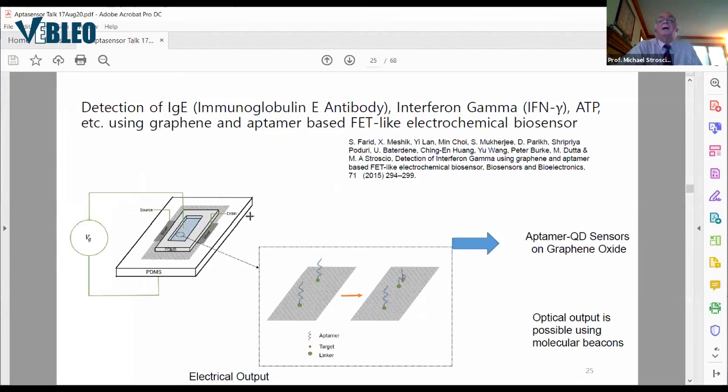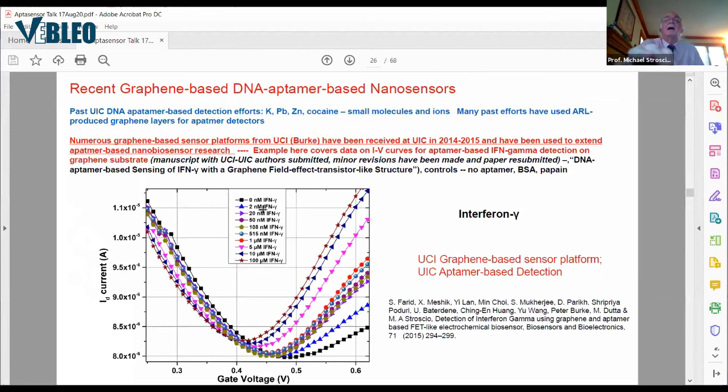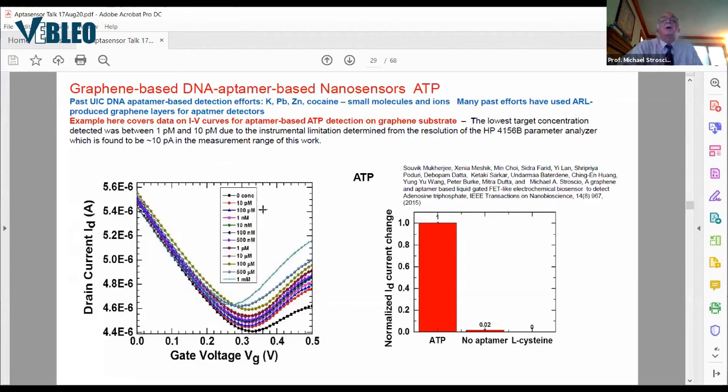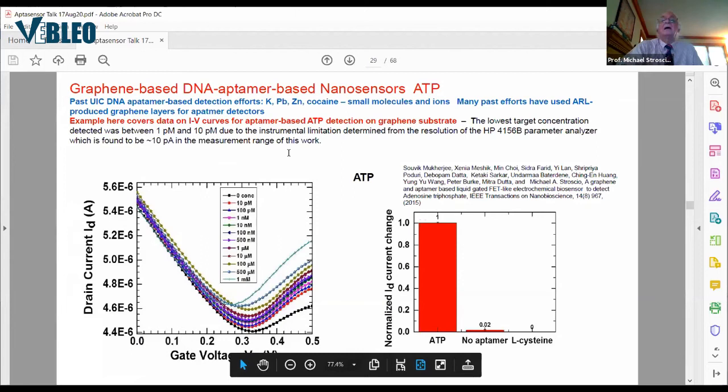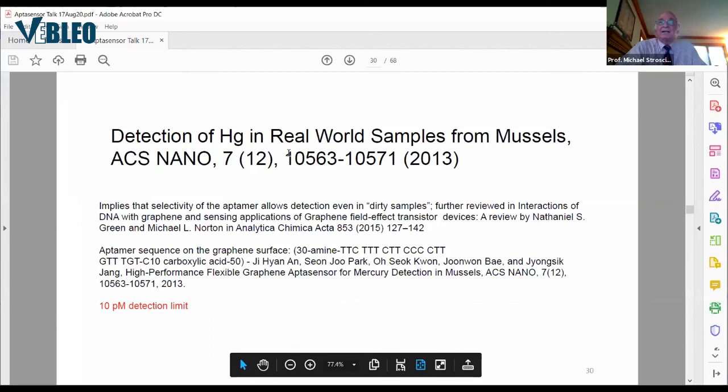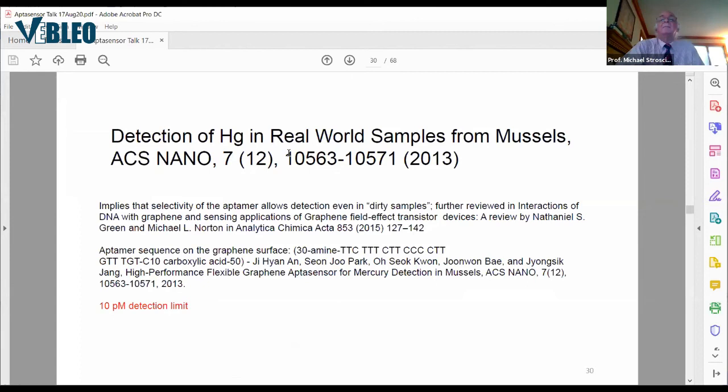This is for interferon gamma, IgE. Again, we've gotten into the picomolar range for a lot of these analytes. This shows two nanomolar for IFN gamma. ATP is another one we've studied. This shows for ATP, the detection curves down to 10 picomolar. This has been used by other people to detect mercury in mussels. It's possible to do this detection in the so-called dirty environment.